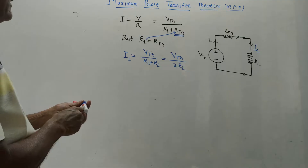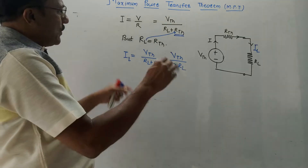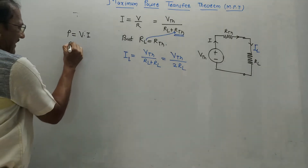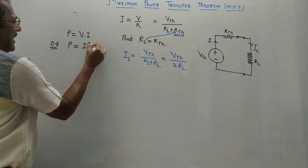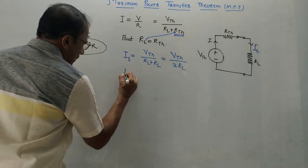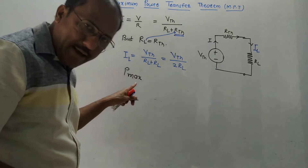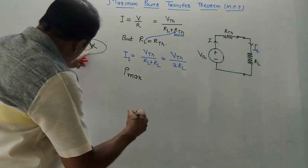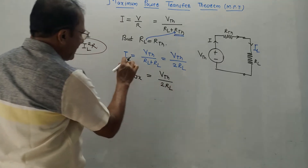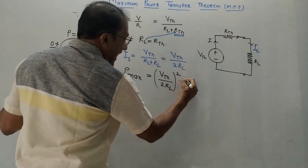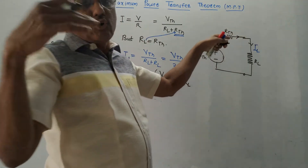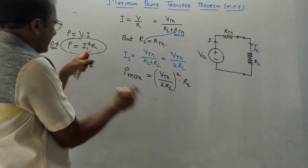We are interested in deriving the expression for maximum power delivered to the load. The basic equation of power is P equals V into I, or alternatively P equals I squared R. Using the second formula, P_max equals IL squared into RL. Substituting IL equals VTH upon 2RL, we get P_max equals VTH squared upon 4RL squared, multiplied by RL. This RL and one RL cancel, so P_max becomes VTH squared upon 4RL.